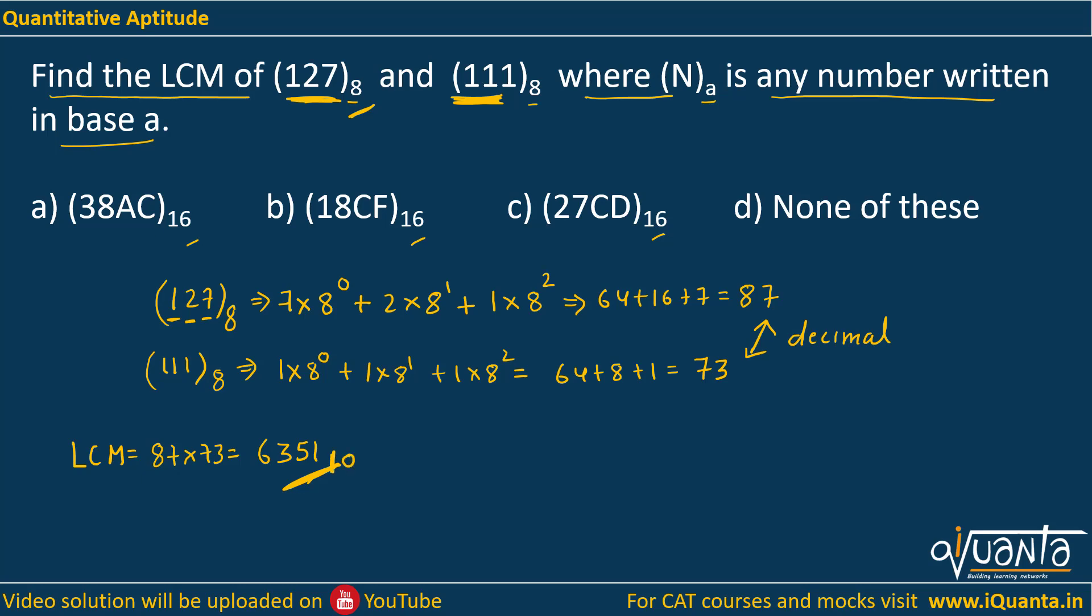We have to convert this to base 16. How do you convert a number from base 10 to base 16 or any other base? First, write down the decimal number 6351. Divide it by the base you want to convert to—in this case, 16, because all the options are in base 16. Divide by 16 and keep recording the remainders with every step.